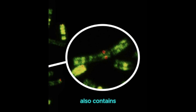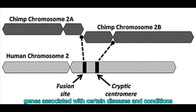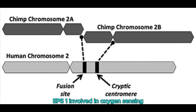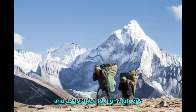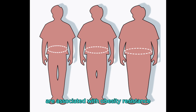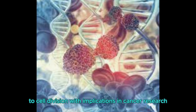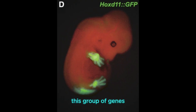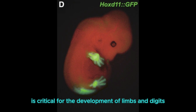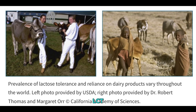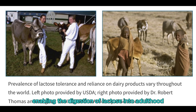Chromosome 2 also contains genes associated with certain diseases and conditions: EPAS1, involved in oxygen sensing and adaptation to high altitudes; GPR75, variants of which are associated with obesity resistance; BUB1, linked to cell division with implications in cancer research; the HOXD cluster, critical for the development of limbs and digits; and LCT, the gene that allows for lactase persistence, enabling the digestion of lactose into adulthood, also located on chromosome 2.